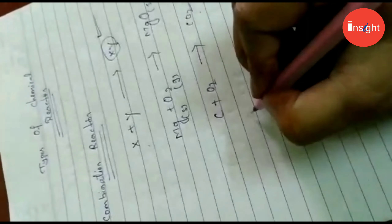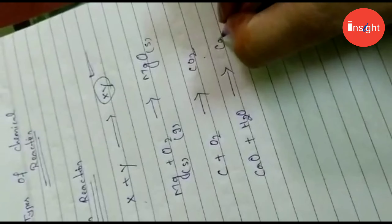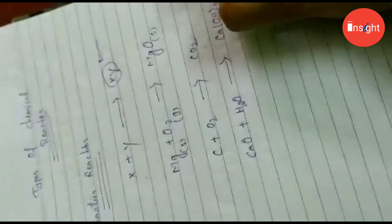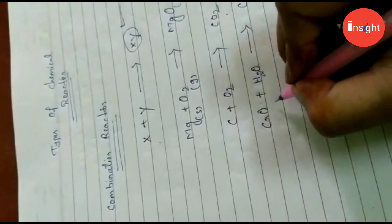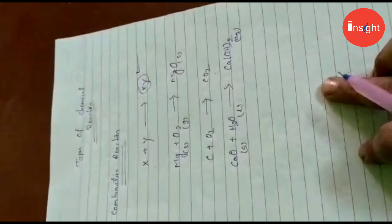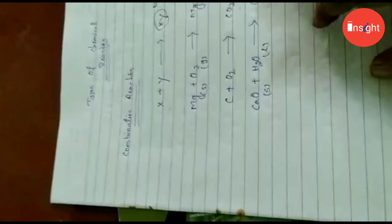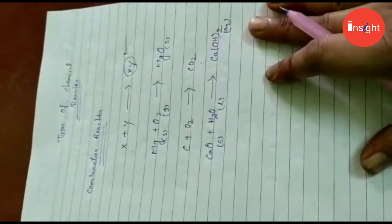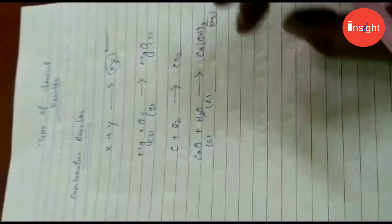Another example: calcium oxide CaO + H₂O gives slaked lime Ca(OH)₂, and a lot of heat is released. We can mention the state as solid, liquid, or aqueous. This is also a combination reaction because two reactants combine to give only a single product, along with the release of a lot of heat.